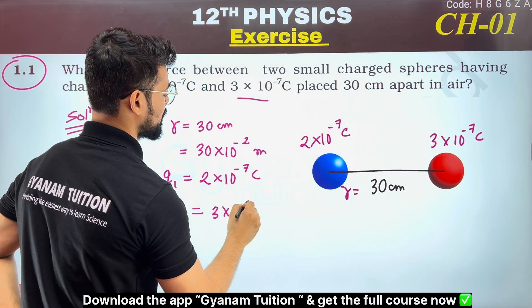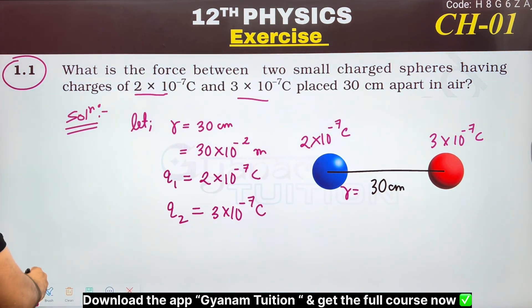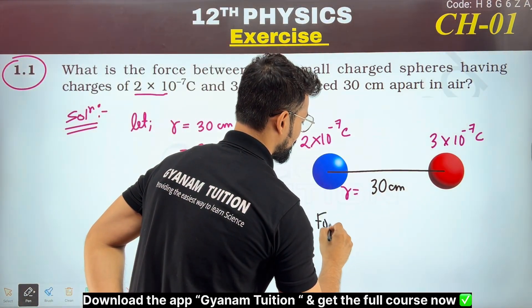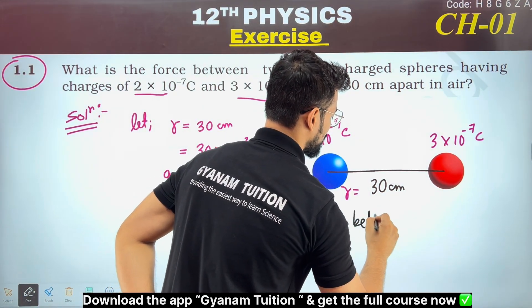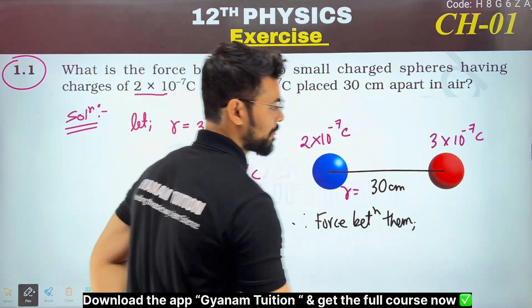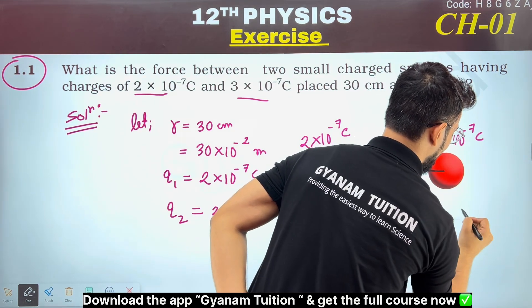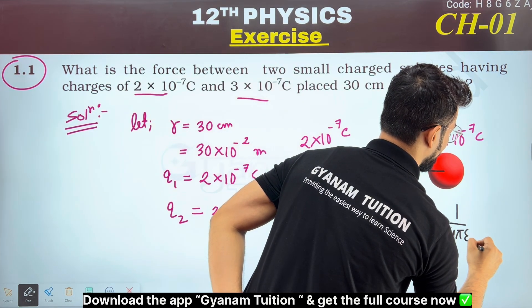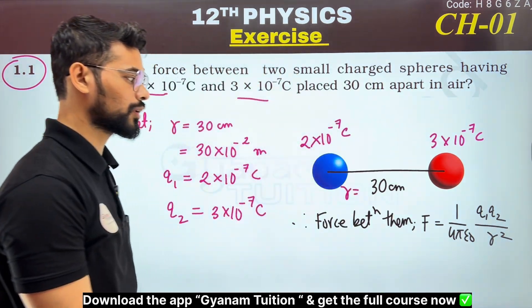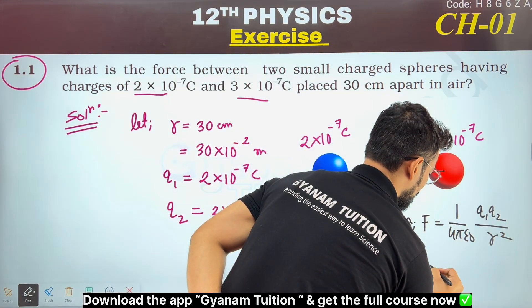Therefore, the force between them. We'll use Coulomb's law: F equals (1/4πε₀) × (q₁q₂/r²). This is the formula. The value of 1/4πε₀ is...